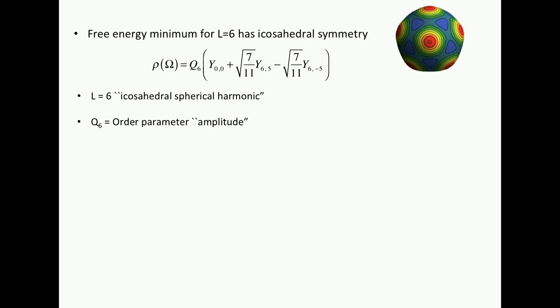So L equals six is called an icosahedral spherical harmonic. It's just a linear combination of spherical harmonics which transforms as an icosahedron. And the only thing left is the pre-factor. If you stick this into the free energy, this is what you get, a simple polynomial expansion, quadratic, cubic, quartic. If you plot it, it looks like this.